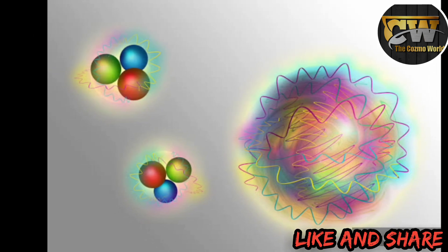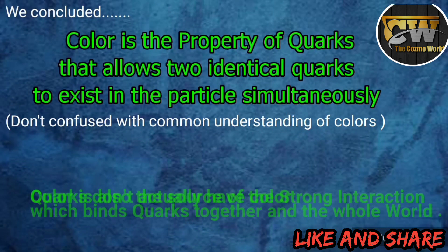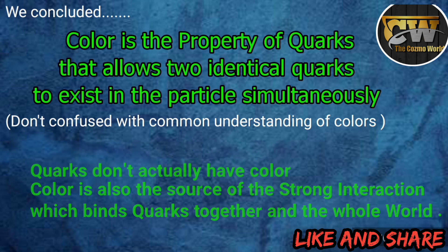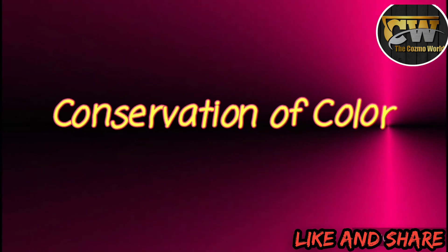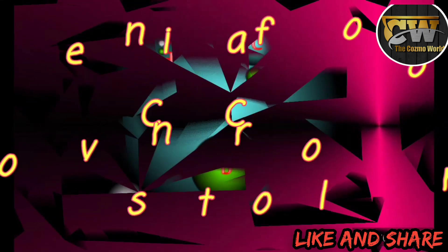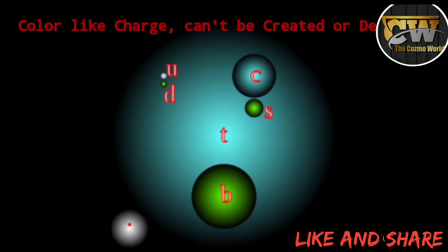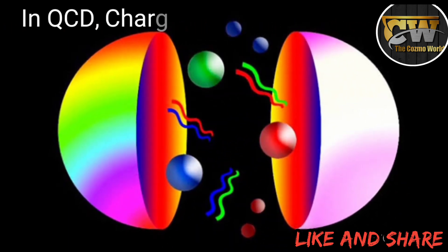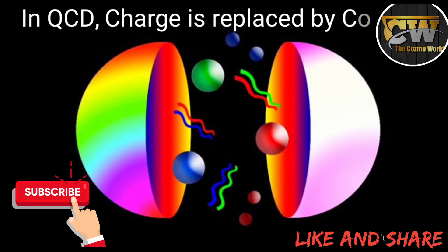Quantum chromodynamics, QCD, is the theory to explain how quarks have strong interaction. Color is also the source of the strong or color force which binds quarks together. Color, like charge, is a conserved quantity which cannot be created or destroyed. The main difference between QCD and quantum electrodynamics is that charge is replaced by color.